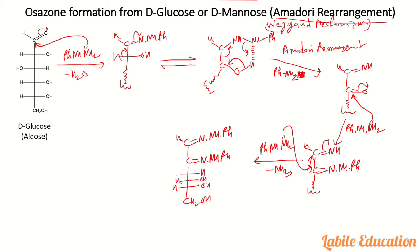The complete structure drawn is D-glucosazone. This osazone has phenylhydrazine groups at C1 and C2 — it is the 1,2-bis-phenylhydrazone. Similarly, for D-mannose — which is the C2 epimer of glucose as discussed in the last video — the same mechanism takes place, since the only difference is that the OH at C2 is on the left side. It gives the same osazone, called mannosazone.